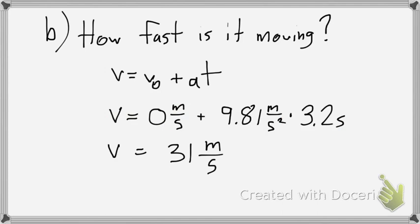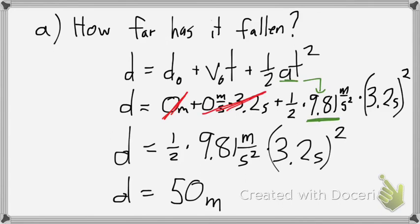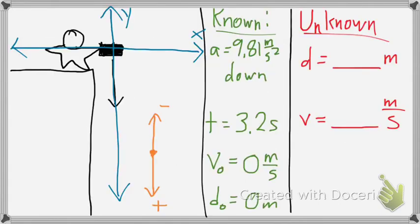So solving and rounding for sig figs, I get around 31 meters per second. Whew! That laptop is booking it. Now, I got a positive 31 meters per second, and I got a positive 50 meters. So that tells me I've got a velocity of 31 meters per second in the downward direction, and the distance traveled is around 50 meters downward. And all of that makes sense. Awesome.